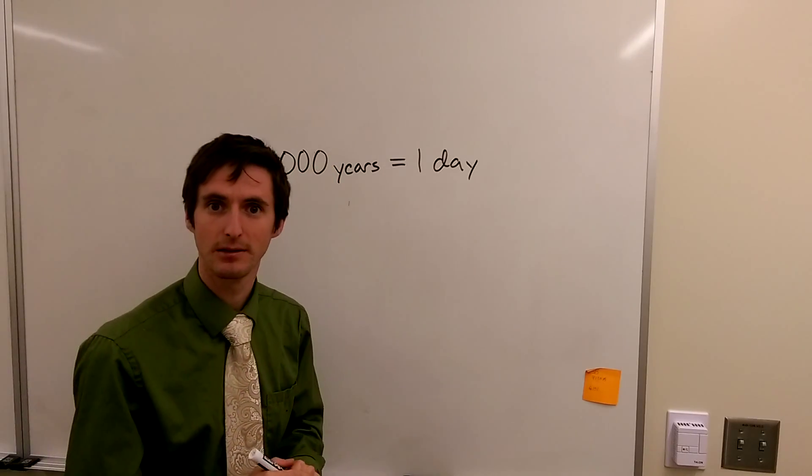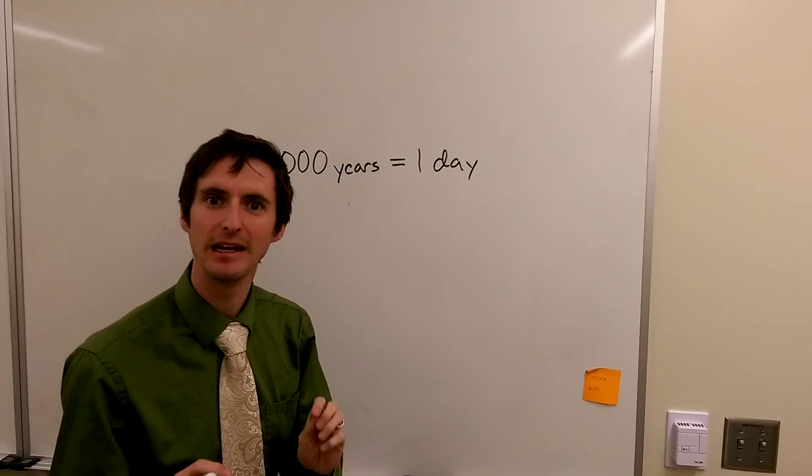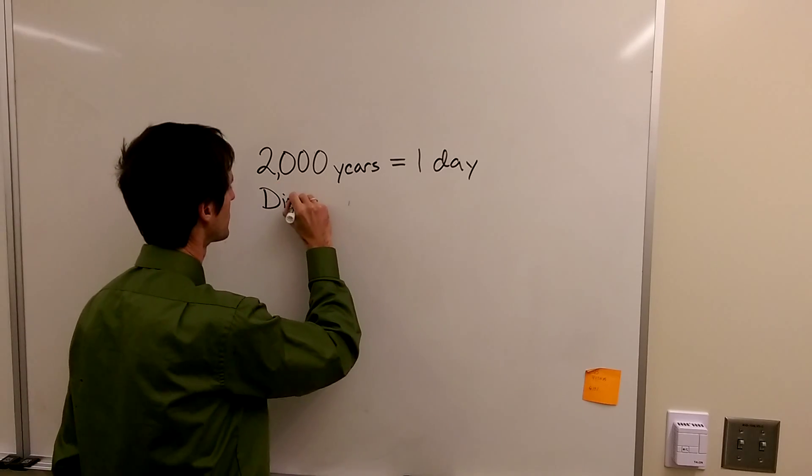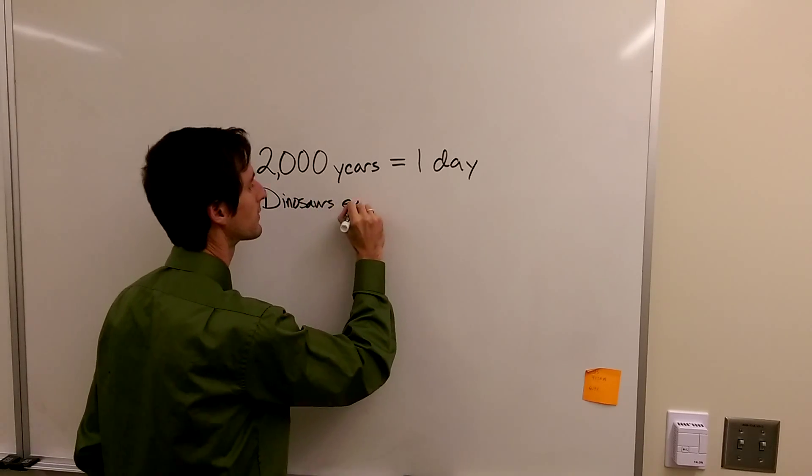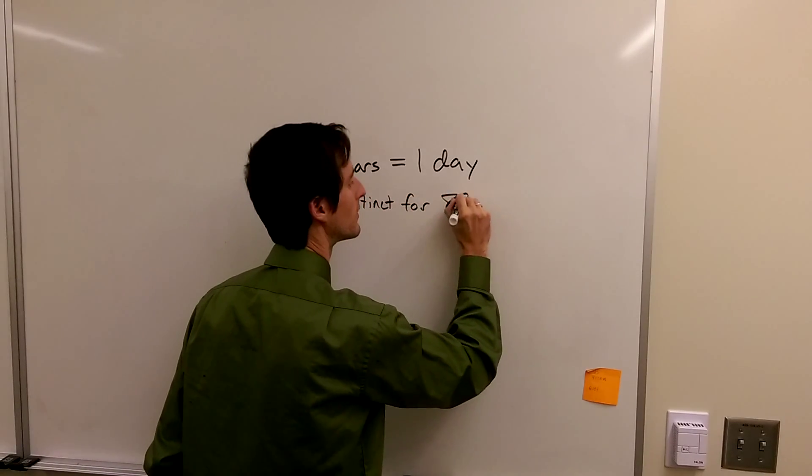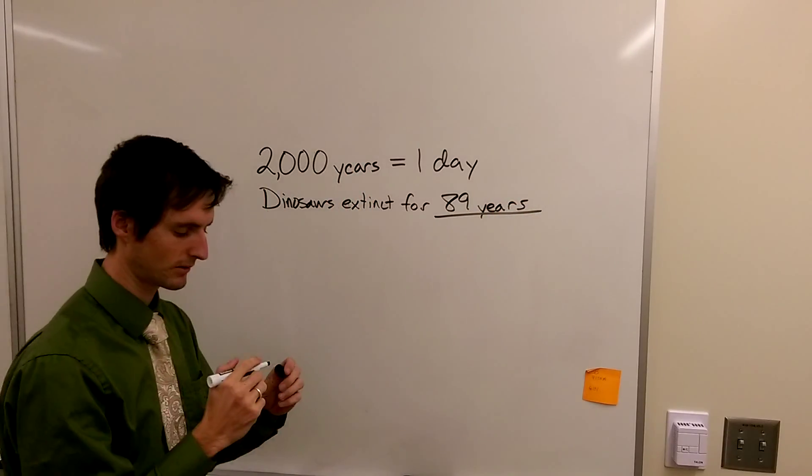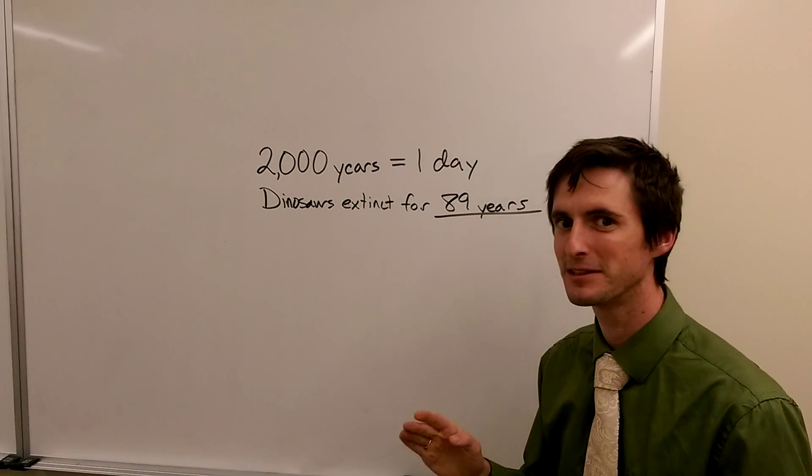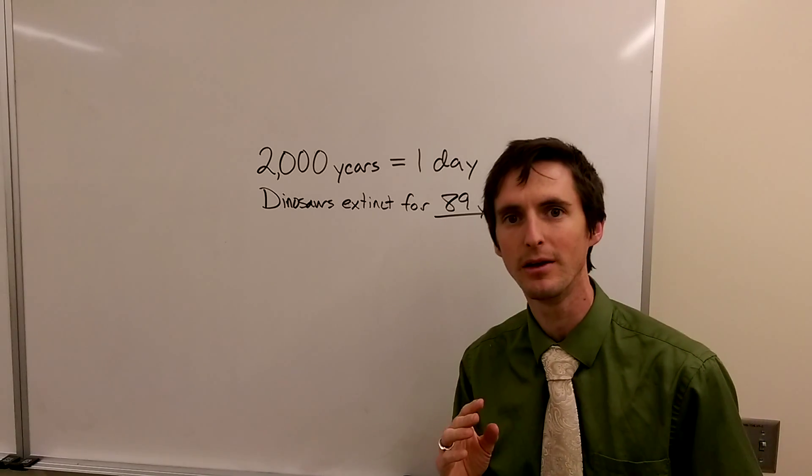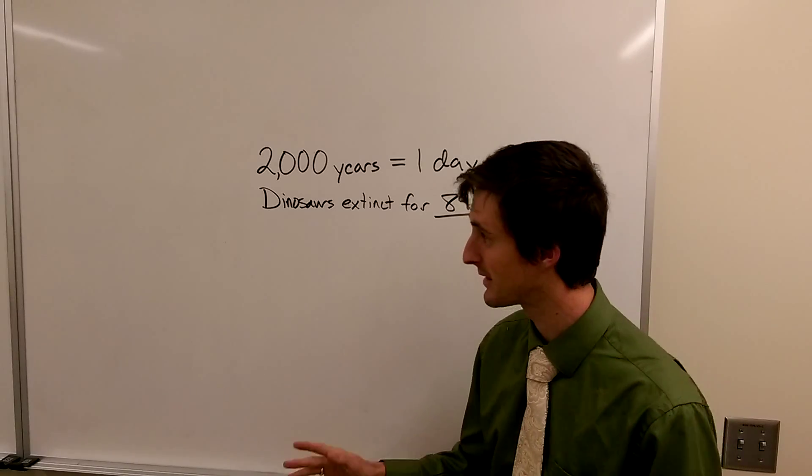At a period of time like this, the dinosaurs still would have died out 89 years ago. All of a sudden we get this down to a period of time we can conceive of. 2,000 years is just yesterday. Today the dinosaurs are still gone for 89 years. This is pretty incredible.